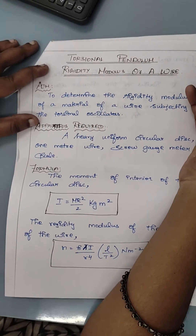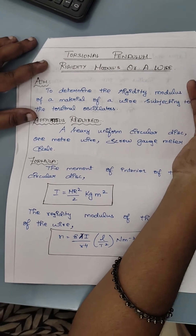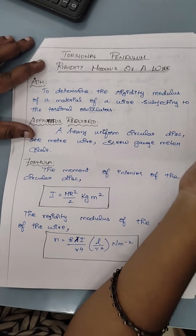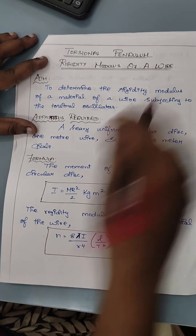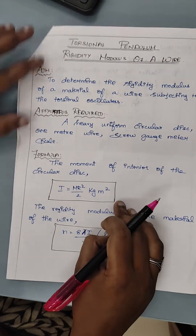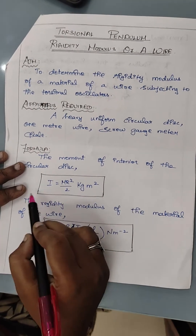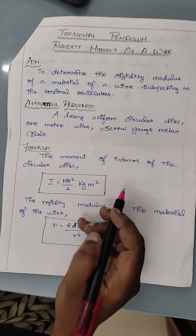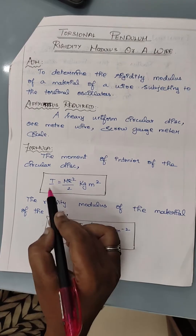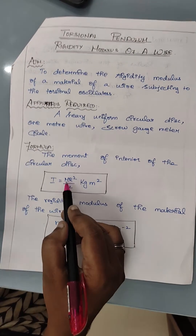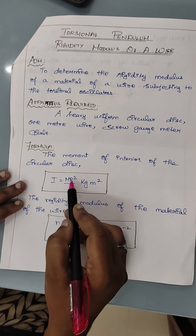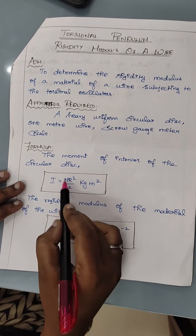Let's start with the calculation for torsion pendulum to find the rigidity modulus of the wire. The formula for moment of inertia is I = M·R² / 2.